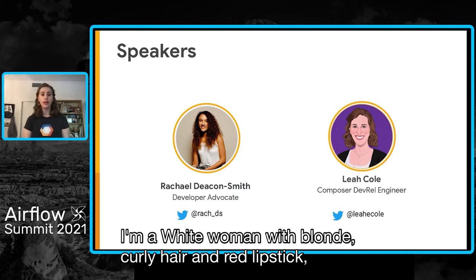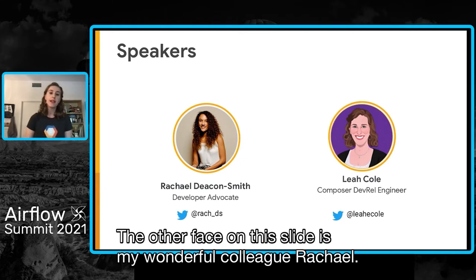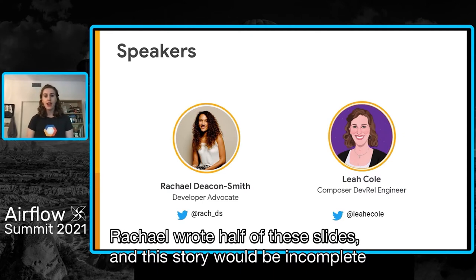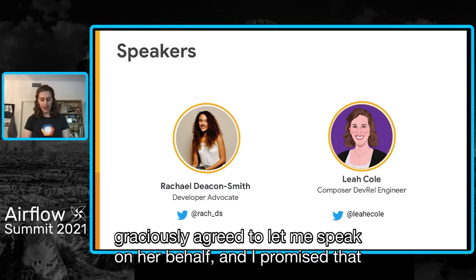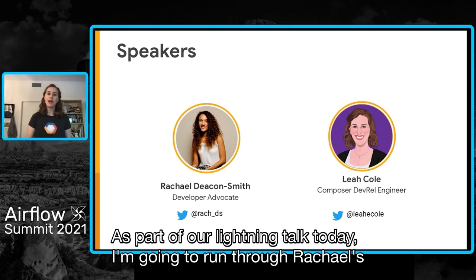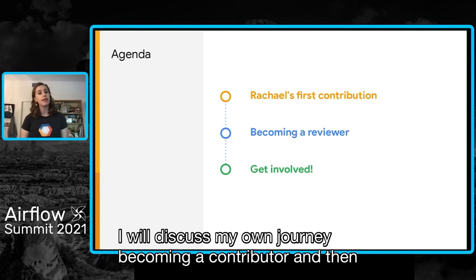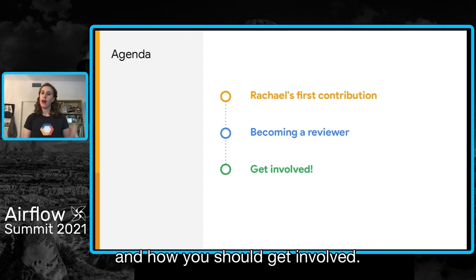I am a white woman with blonde curly hair and red lipstick, coming to you from my home office in California. The other face on the slide is my wonderful colleague Rachel. She is a developer advocate based in London. Rachel wrote half of these slides and this story would be incomplete without her side of it. Unfortunately she could not make it to the talk today, but she graciously agreed to let me speak on her behalf — and I promise I will not try to do it in her British accent. As part of our lightning talk today, I'm going to run through Rachel's first contribution to the Apache Airflow project, discuss my own journey becoming a contributor and then a committer, and give you some pointers on why and how you should get involved.